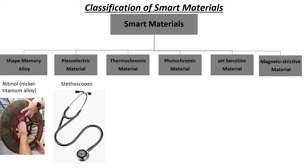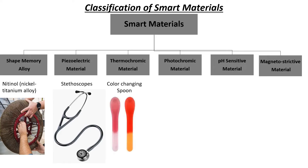Now, thermochromic materials. Thermochromic materials change their color based on temperature fluctuations. These materials have applications in smart textiles and temperature indicators. For example, a thermochromic spoon, or color-changing spoon — it is a special kind of spoon that changes color based on the temperature of the food. It's like a tiny thermometer that tells you if your food is hot or cold.